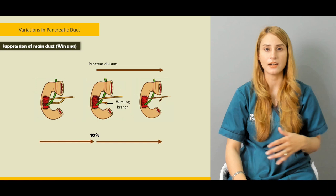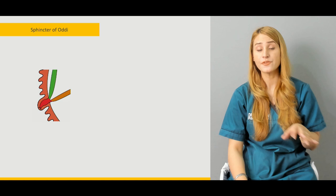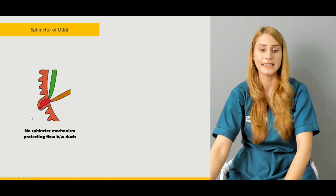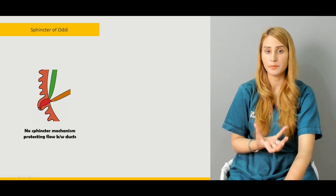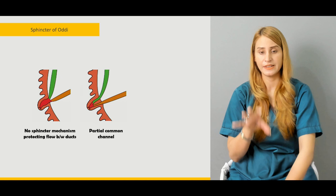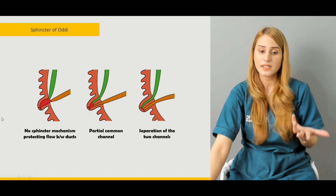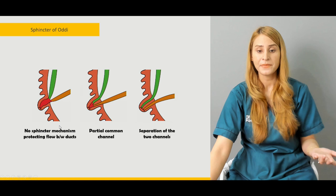Pancreatic divisum occurs when the ventral and dorsal pancreatic ducts are unable to fuse with each other. The sphincter of Oddi is very important because it encircles the ampulla of Vater. The common bile duct and pancreatic duct have an important relationship with the major duodenal papilla. Variations in the sphincter of Oddi include no sphincter mechanism, a partial common channel, or separation of the two channels.